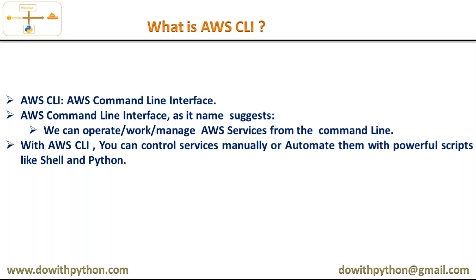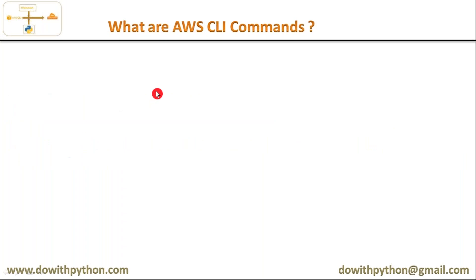What are AWS CLI commands? These commands are like your operating system commands. For example, if you want to create a directory, remove a directory, find some file, locate something, or create a file — for all these tasks on your operating system, whether Windows, Linux, or iOS, you have commands. Same way, AWS CLI commands are the commands to work with your AWS services from your AWS CLI.